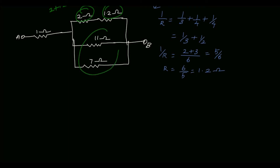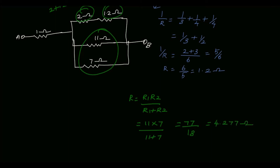Here the equivalent resistance is equal to R1 times R2 divided by R1 plus R2. Here R1 is 11 and R2 is 7, so 11 times 7 divided by 11 plus 7 equals 77 divided by 18, which is equal to 4.277 Ohm. So we will replace the 11 Ohm and 7 Ohm resistors by a single 4.277 Ohm resistor.